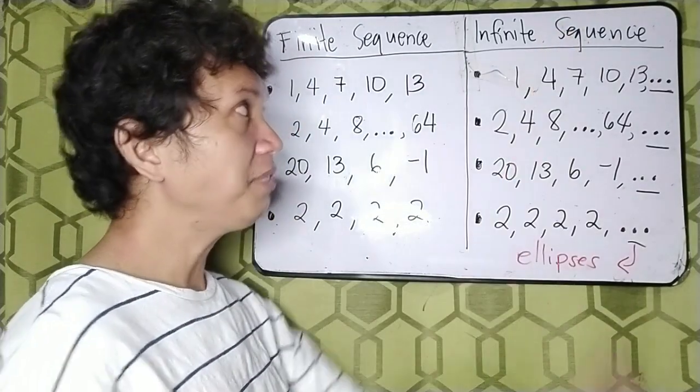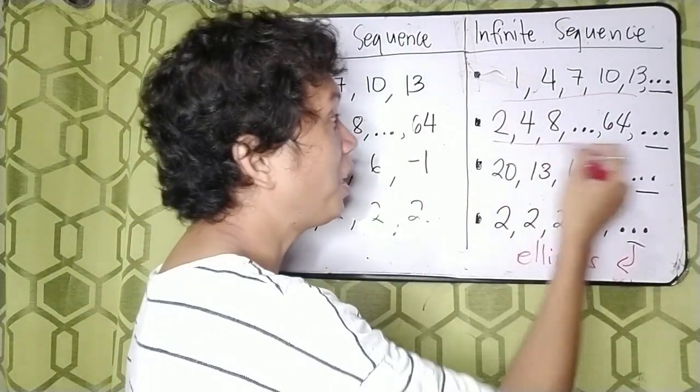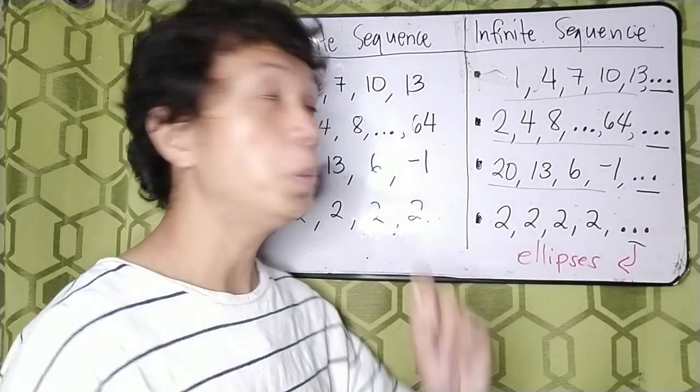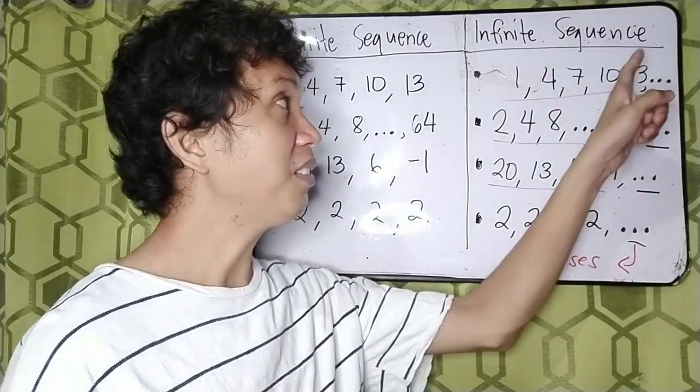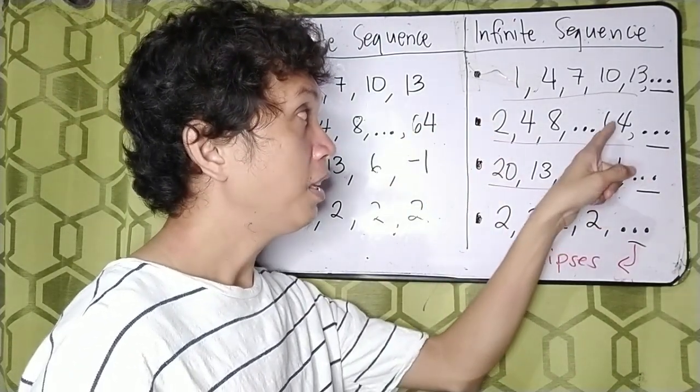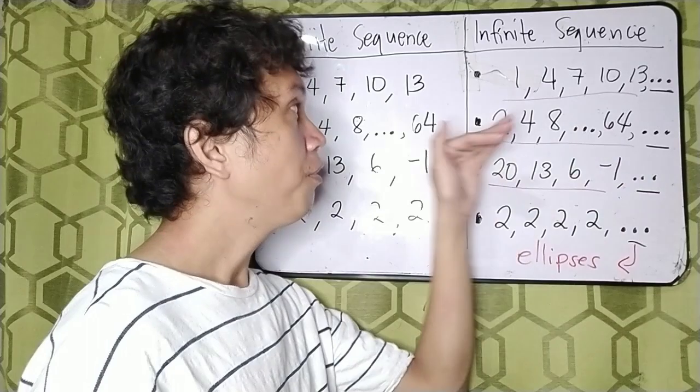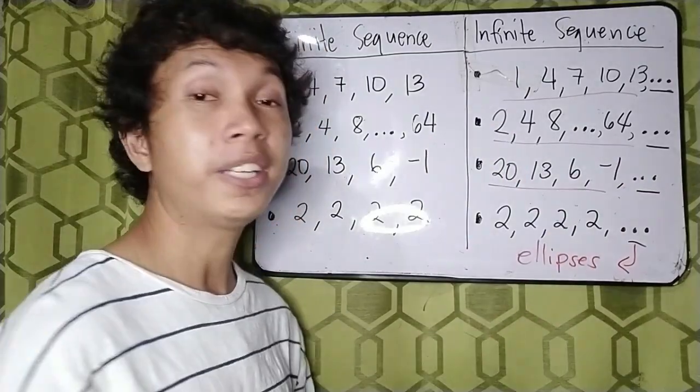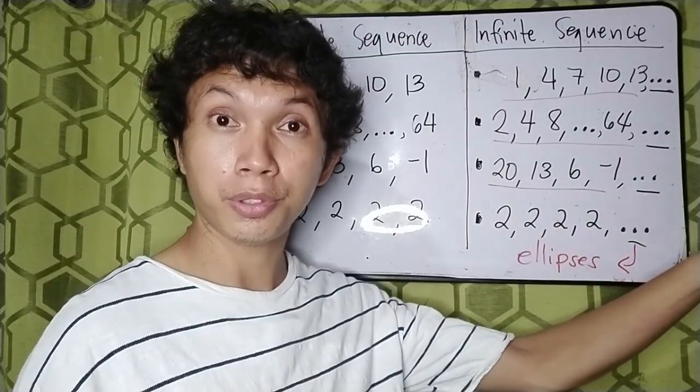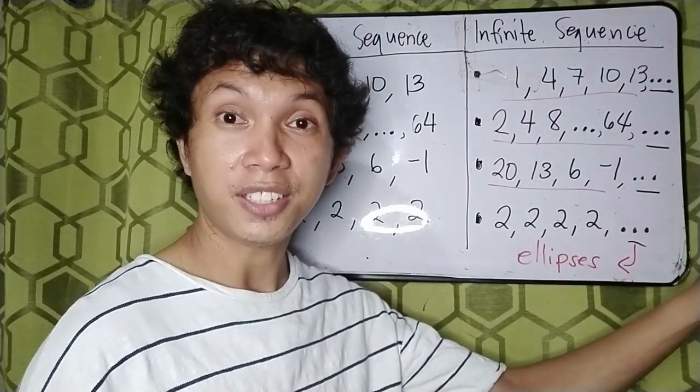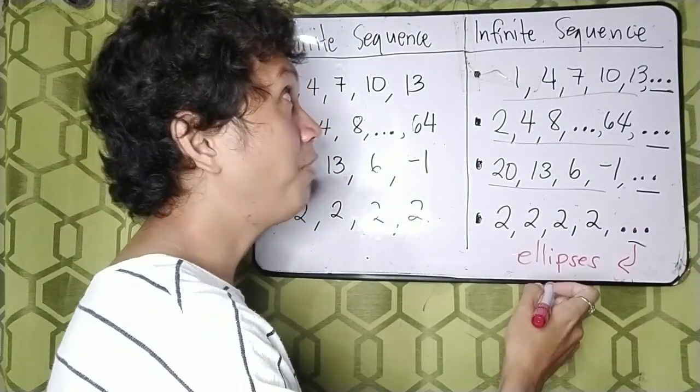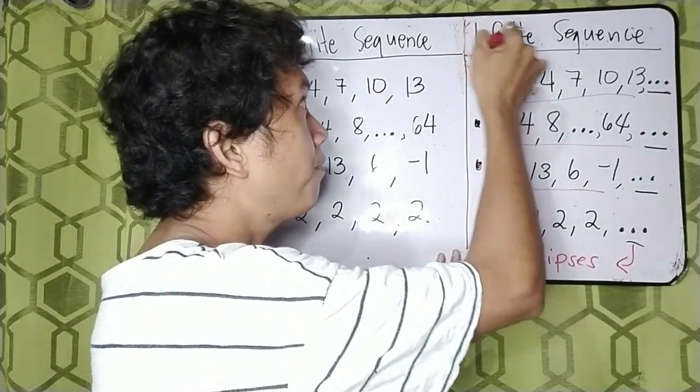So meaning, our sequence here under infinite sequence, it does not only stop in 13. For the first example, it does not only stop in 64 for the second and so on and so forth. It means that this sequence continues. Does it have an end? No. Since it does not have an end, that's why we call it infinite.